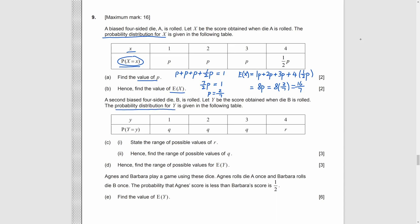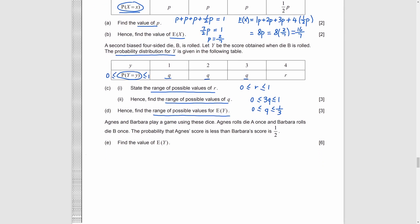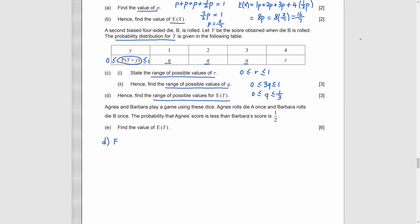Part C, we need to find r. As probability of any situation or all the situations must be between 0 and 1, so does r. Similarly, we have 3q between 0 and 1. And thus, q is between 0 and 1 third. Part D, we want to find the expected value of y. Similar to part B, we add all the values multiplying their own probability together. And we get 6q plus 4r. Then we stuck. Since there is no way for us to tell the range of E(y). What should we do?